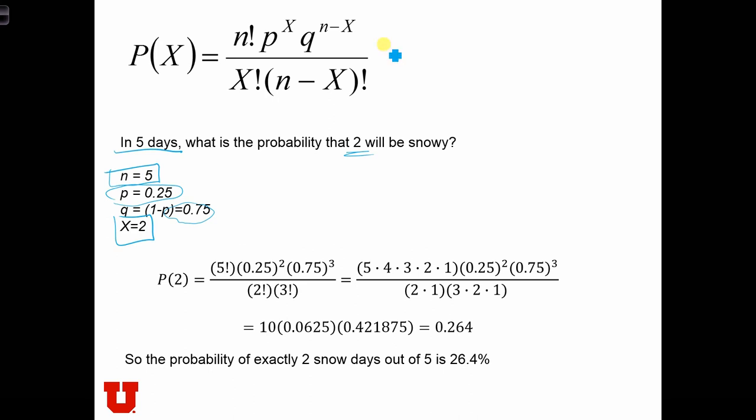Now we just simply plug everything in. 5 factorial, p is 25%, x is 2, and q is 75%, n minus x, 5 minus 2, is 3. This is all going to be over 2 factorial, n minus x is again 3 factorial.